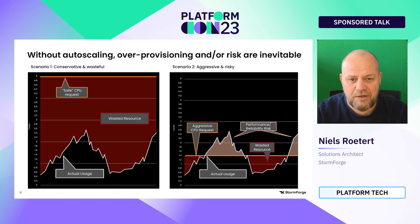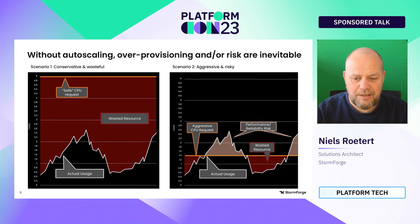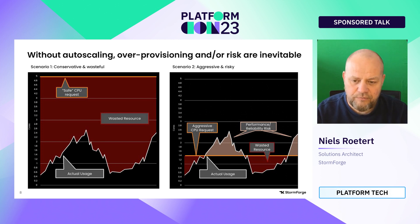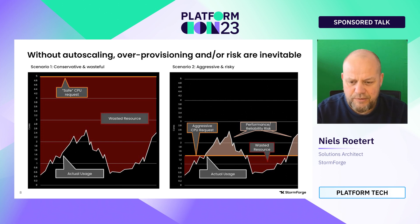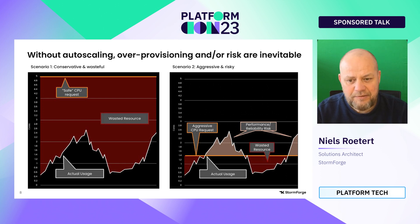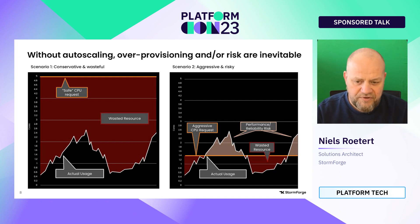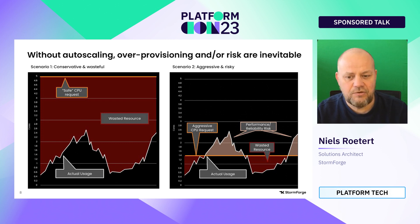What we see is that when people leverage autoscaling like HPA, they might consider lowering requests, because quite often people tend to over-provision resources heavily just to make sure the application runs well. But if you're still over-provisioned and leveraging HPA, when you scale out you're actually multiplying the problem of over-provisioning.